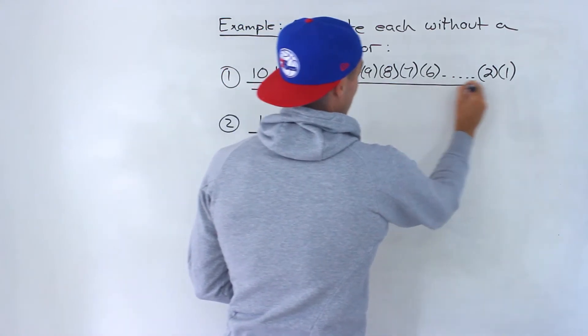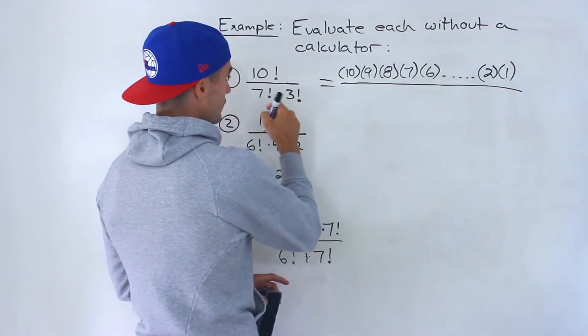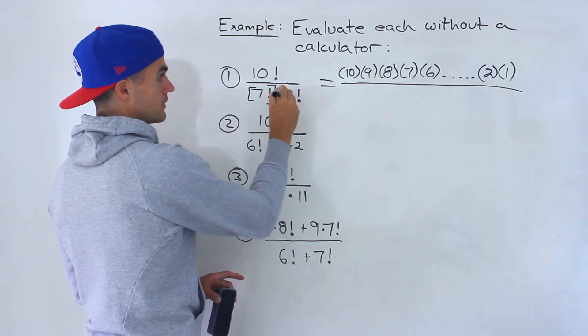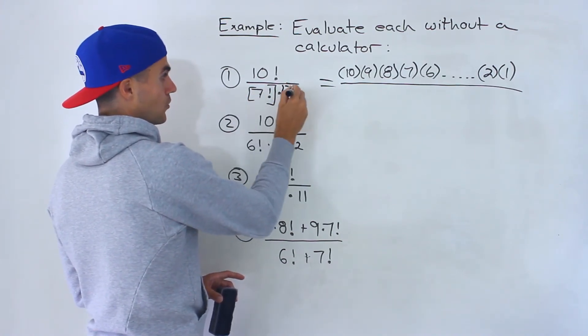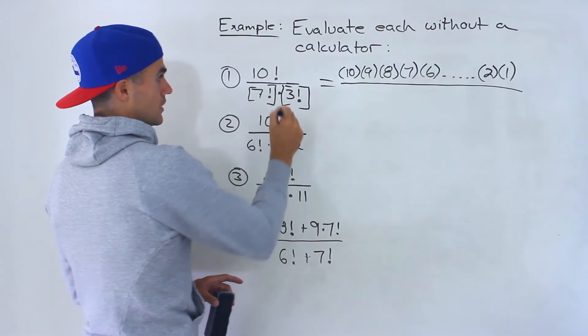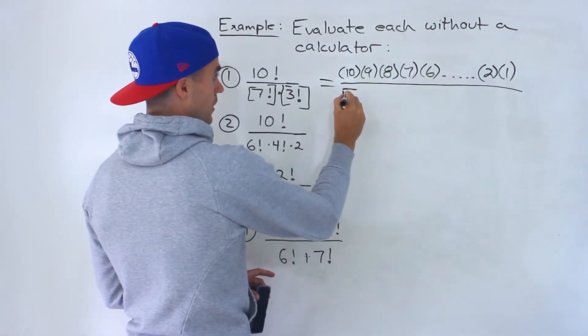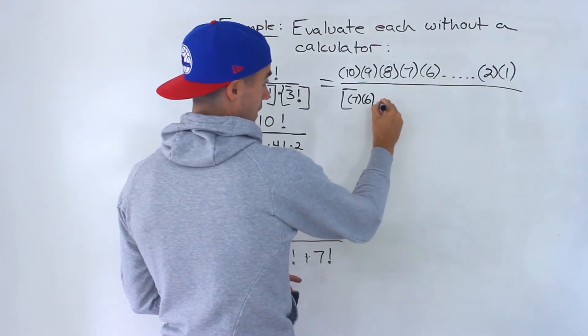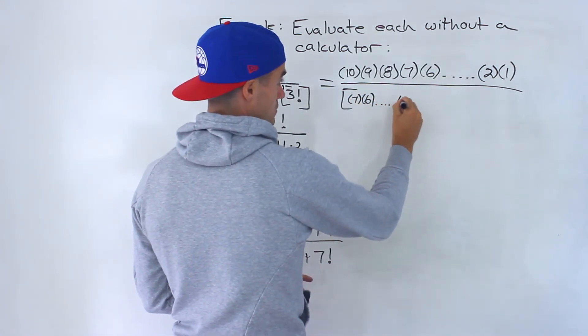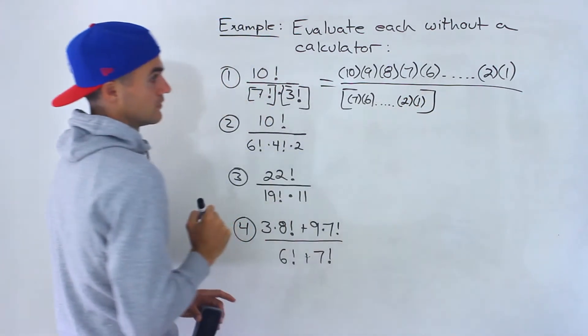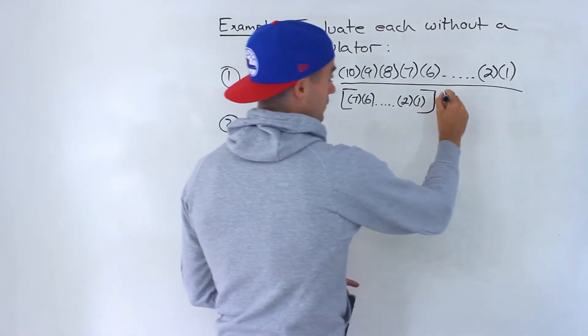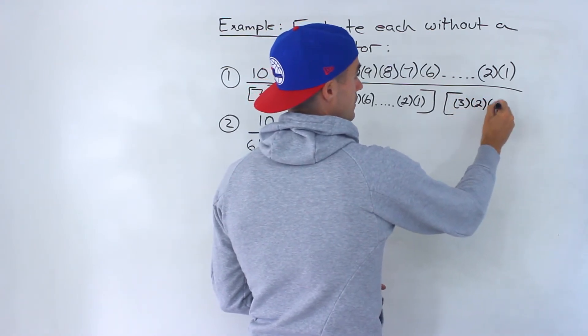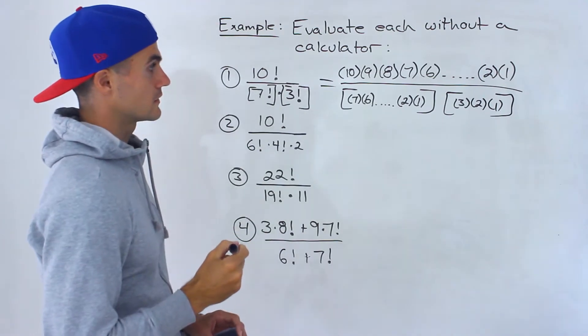And then the denominator, 7 factorial. I'm going to put this in a square bracket. This dot here is multiplying these two. So we got 7 factorial times 3 factorial. 7 factorial is going to be 7 times 6 times 5 times 4 times 3 times 2 times 1. And then 3 factorial is just 3 times 2 times 1.